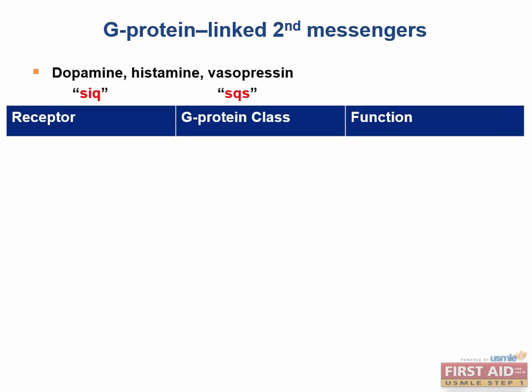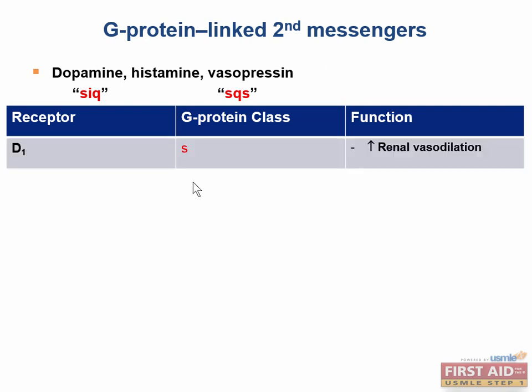Having covered the alpha, beta, and muscarinic receptors, let's talk about the dopamine, histamine, and vasopressin receptors. The D1 receptor is of the G-sub-S class, found primarily in the kidney. When stimulated, the D1 receptor functions to relax renal vascular smooth muscle, which will increase renal blood flow.